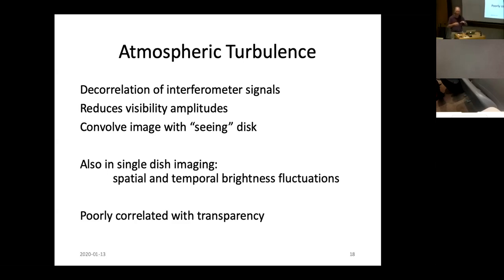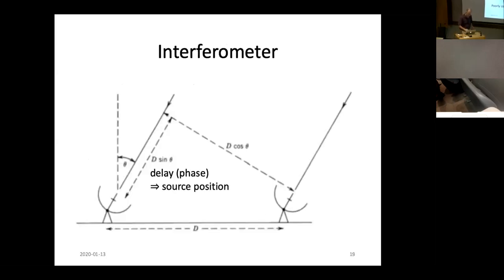The turbulence is actually fairly poorly correlated with transparency. And you can think of this, if you think of a swimming pool, you can have ripples on the surface of the swimming pool. The size of the ripples on the swimming pool surface don't necessarily have anything to do with the depth of the swimming pool.